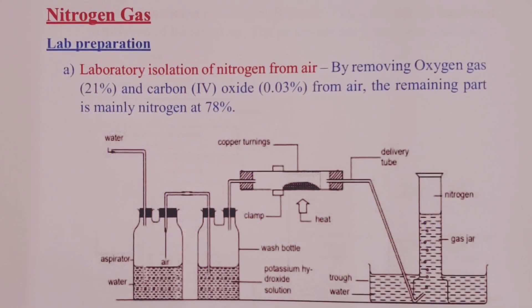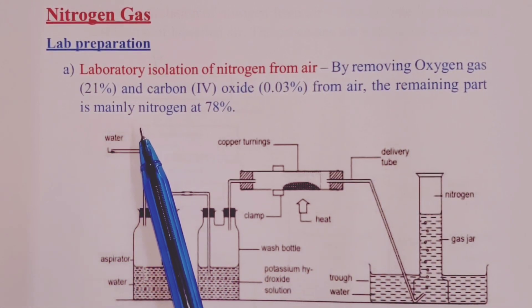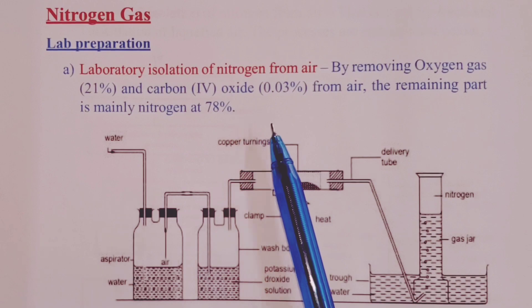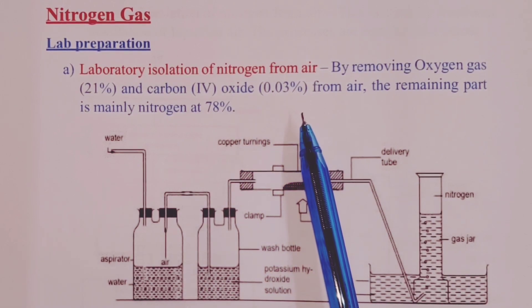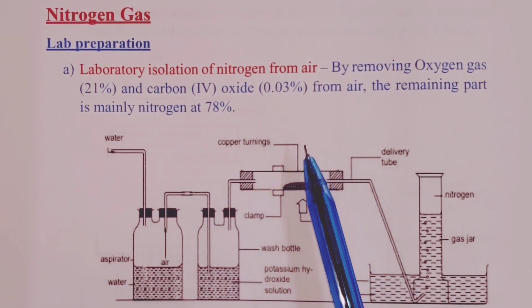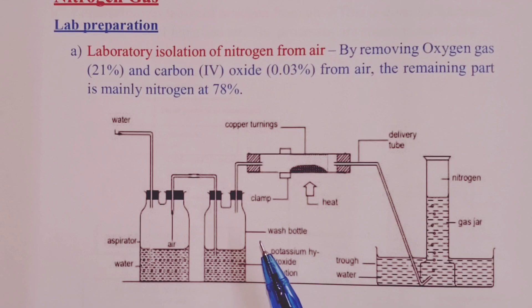And so, we begin with nitrogen. In the laboratory, nitrogen gas can be isolated from air. And what we are saying is that when you remove oxygen, which forms about 21% of air by volume, and carbon (IV) oxide, which forms about 0.03% of air by volume, then the remaining part of air is mainly nitrogen, which we know occupy 78% of air by volume.